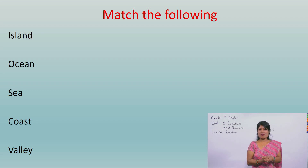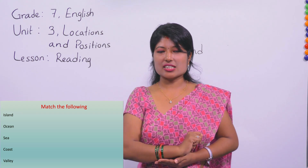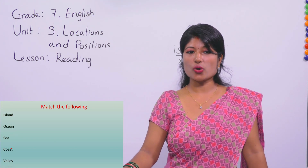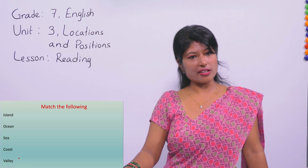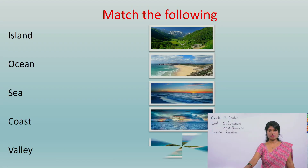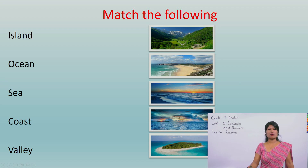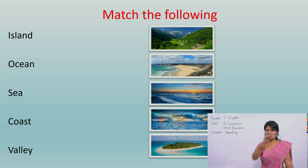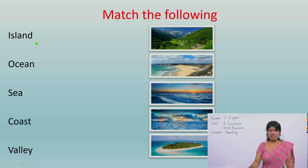Now it's time for testing whether you have learned the meanings of these words. I am going to test it through matching the following words. We have the words: Island, Ocean, Sea, Coast, Valley. I have five pictures in random order and we need to match them. I hope you are excited to do it because you have already learned these and seen the pictures.